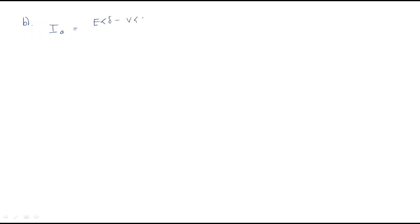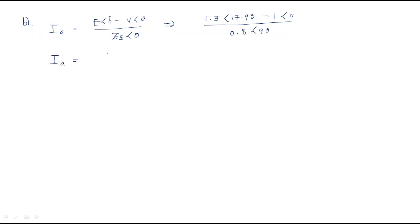Next we find the armature current. The armature current formula is IA = (E∠δ - V∠0°) / (Zs∠θ). Substituting: (1.3∠17.92° - 1∠0°) / (0.8∠90°). Working this out gives IA = 1.65 - j·3.86, which in polar form is 0.58∠-30.64°.